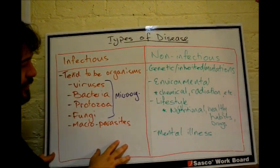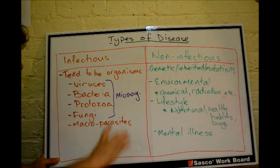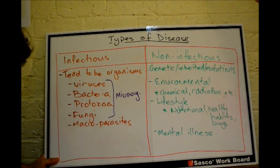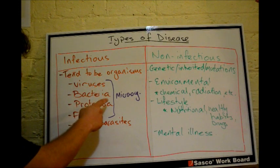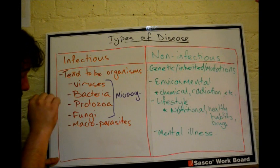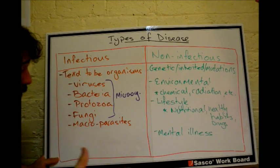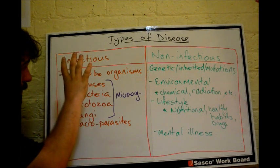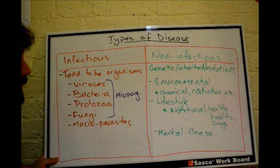Now let's focus on the types of disease. For infectious diseases, they tend to come from organisms. There are prions, which we won't get too much into. Then you have microorganisms: viruses, bacteria, protozoa, and fungi. And then you have macro parasites — things like tapeworms. These are where your infectious diseases come from.